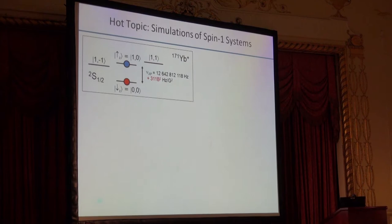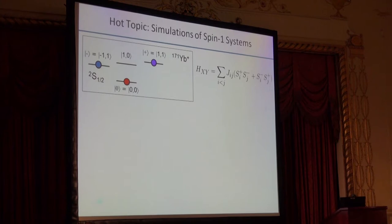Now since this is a hot topic session, I want to use the last two minutes of my talk to discuss a particularly hot topic in our lab right now, which is simulations of spin systems of higher dimensionality than just spin-half. I've showed you how we can encode a spin-half qubit in the ground state structure of Ytterbium, but we can also use the Zeeman levels here and encode three different states using the minus, zero, and plus states. Using a laser configuration not so different than the ones I've shown before, we can realize this native XY type Hamiltonian where now we have flip-flop operators S_i^+ S_j^- and the Hermitian conjugate that act all throughout the spin-1 manifold.